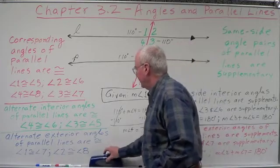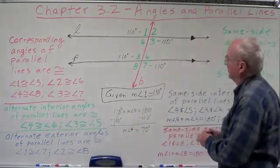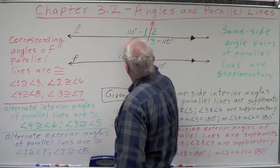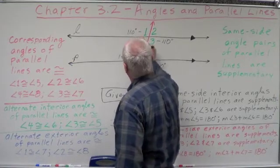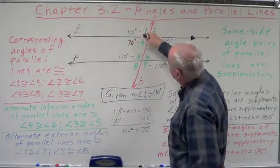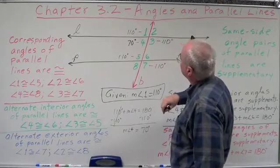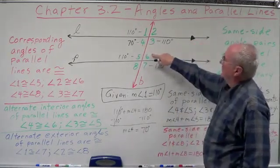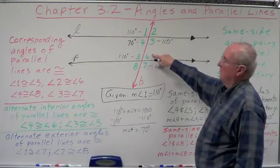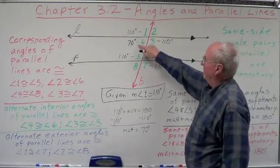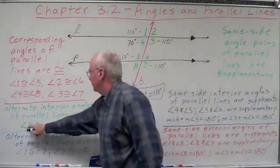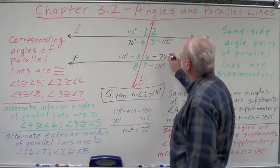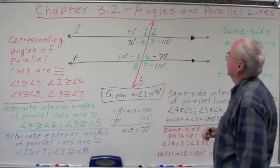Once we know that, we're pretty well set. Angle 4 is 70 degrees — this is a linear pair. Now, alternate interior angles are congruent, and 4 and 6 are congruent alternate interior angles, so angle 6 is also 70 degrees.